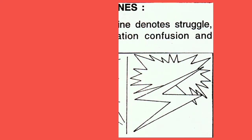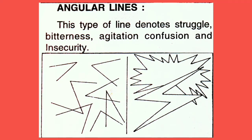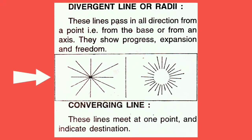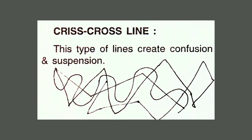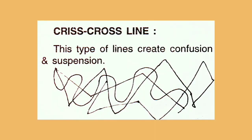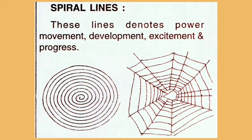Angular type of line denotes struggle, bitterness, agitation, confusion and insecurity. Next, divergent line — this type of line passes in all directions from a point, that is from the base or from an axis. They show progress, expansion and freedom. Whereas converging line meets at a point and indicates destination. Next, face cross line creates confusion and suspense. Spiral lines denote power, movement, development, excitement and progress.